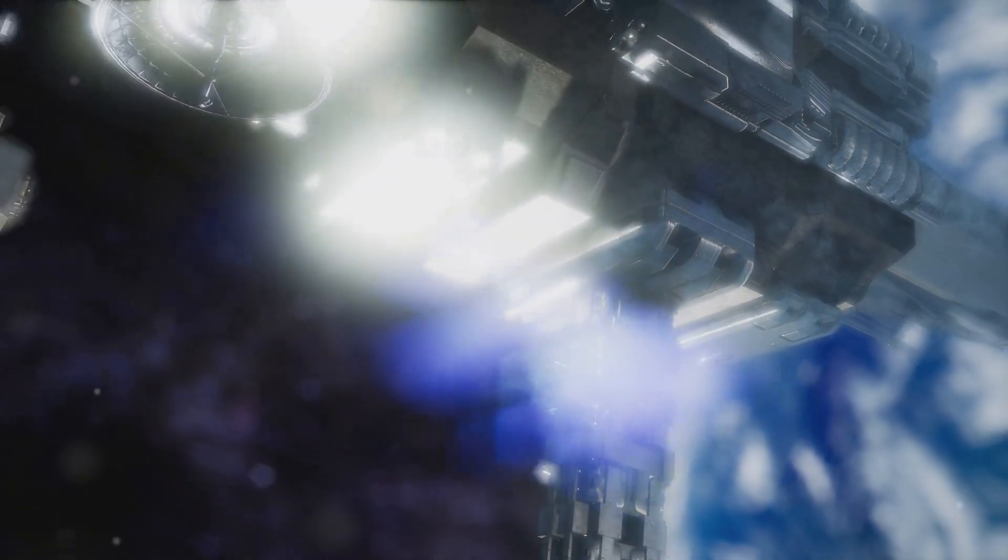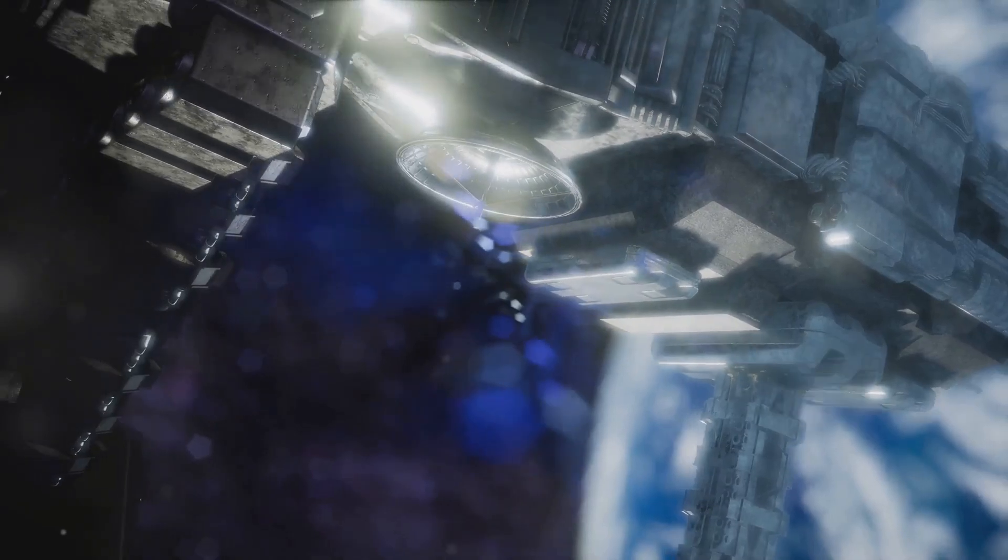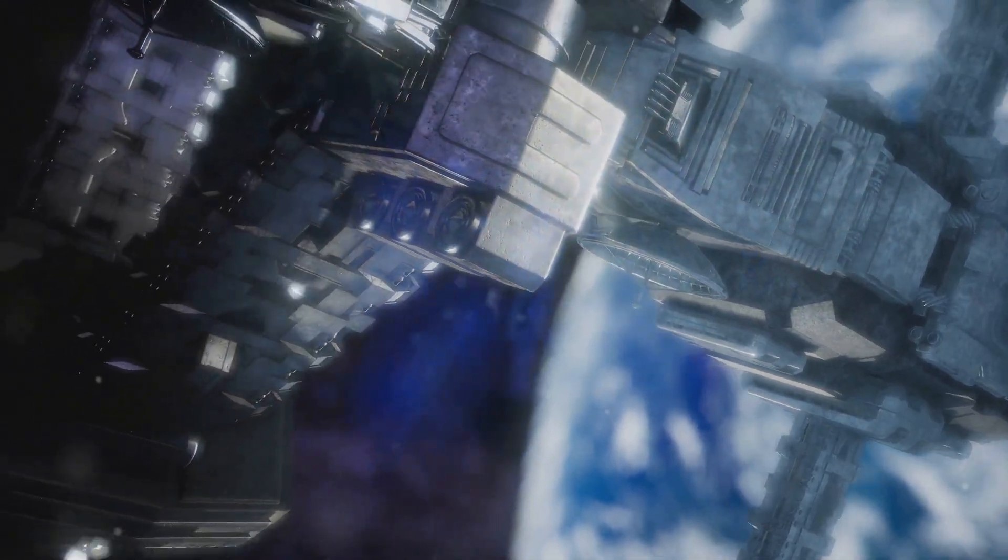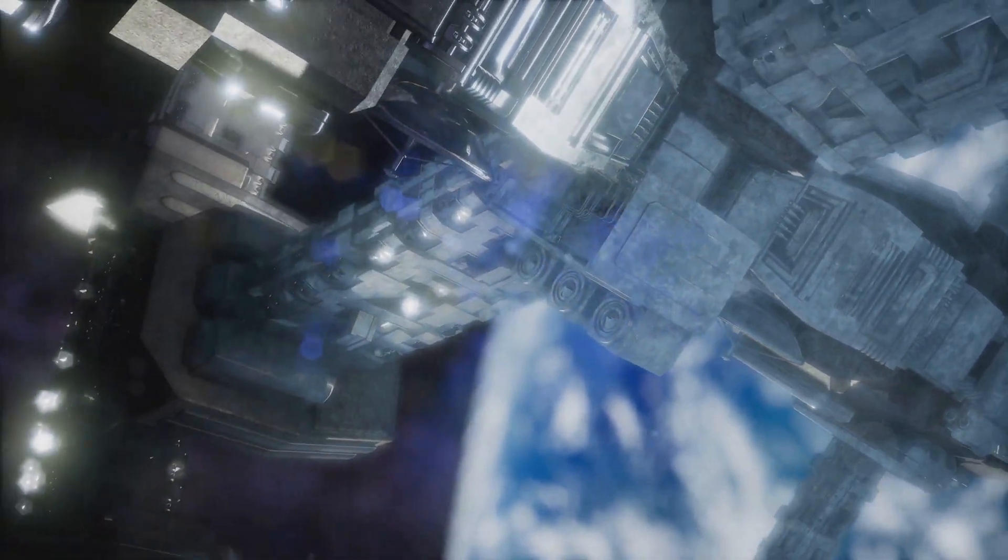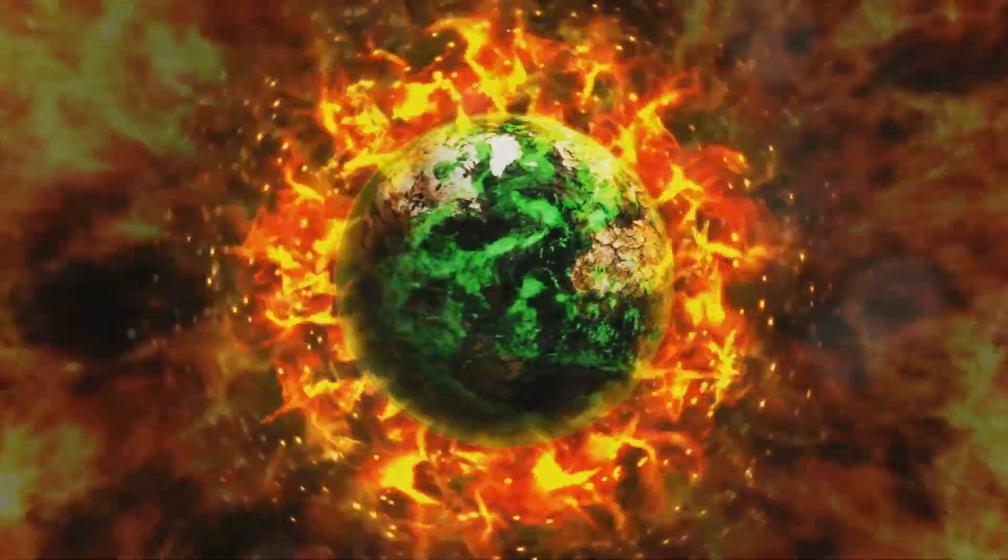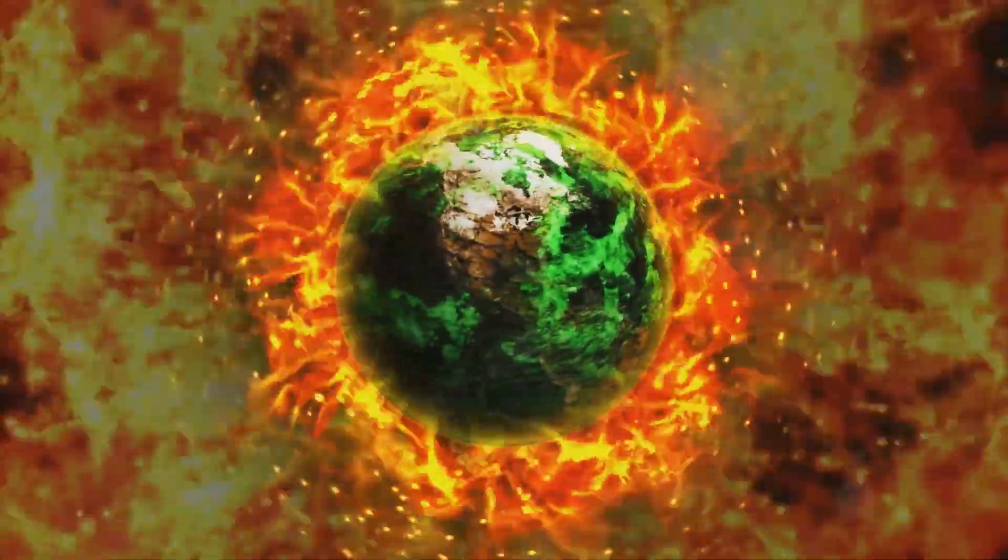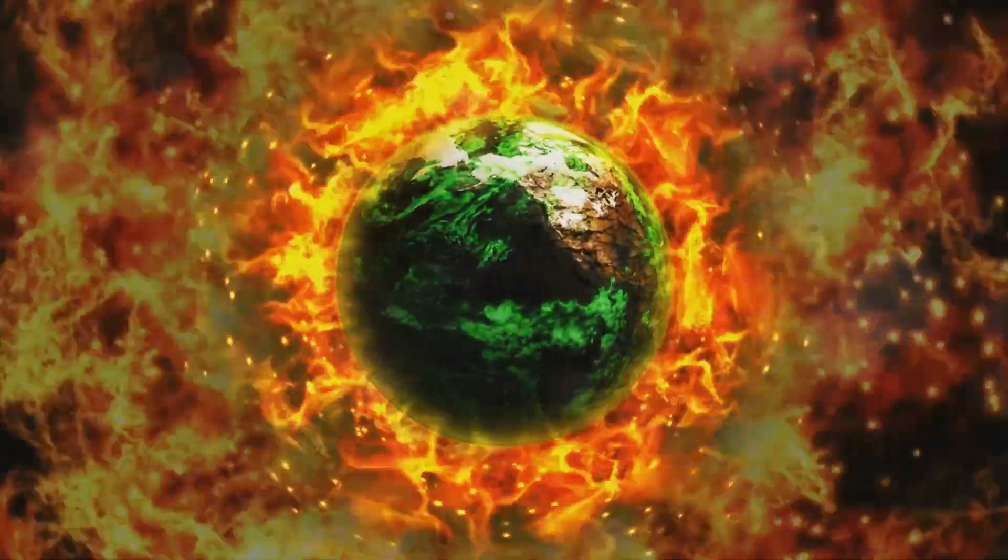Imagine the Earth's atmosphere slowly changing colour from a hazy reddish-brown to a clearer blue, as oxygen levels gradually rose. This transformation, known as the Great Oxidation Event, was a pivotal moment in Earth's history.